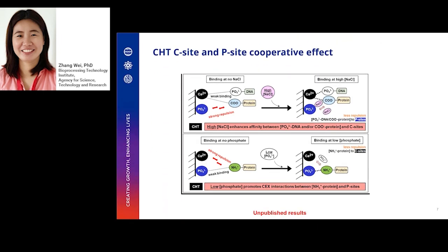Although C-site and P-site are truly independent binding sites, they can work cooperatively under suitable conditions. The calcium C-site binds to carboxylate groups on proteins and phosphoryl residues on DNA by metal affinity, but at the same time there is also strong repulsion between phosphate groups of P-site and DNA and protein due to their same charge. The addition of high concentration of sodium chloride could weaken this repulsive force, thus leading to relative strengthening of C-site binding. A similar concept also applies to the interactions between protein ammonium groups and P-site.